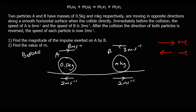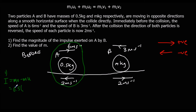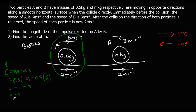Find the magnitude of the impulse exerted on A by B. Impulse is MV minus MU. That's 0.5 times negative 2, minus 0.5 times 6, which is negative 1 minus 3, giving negative 4. We only care about the magnitude, so the answer is 4 newton seconds.